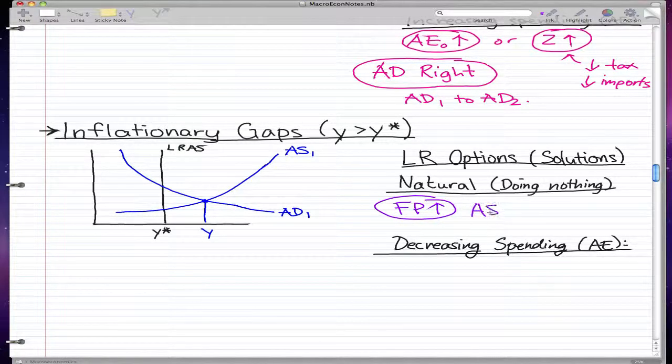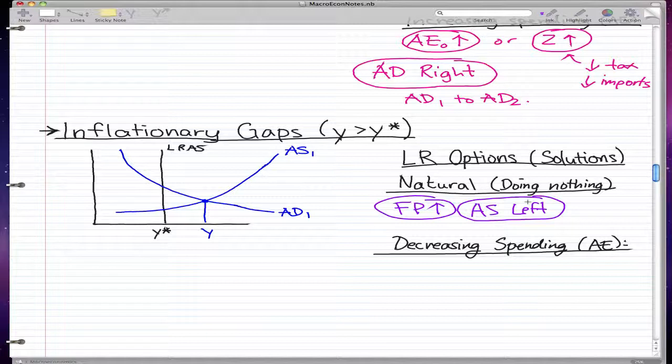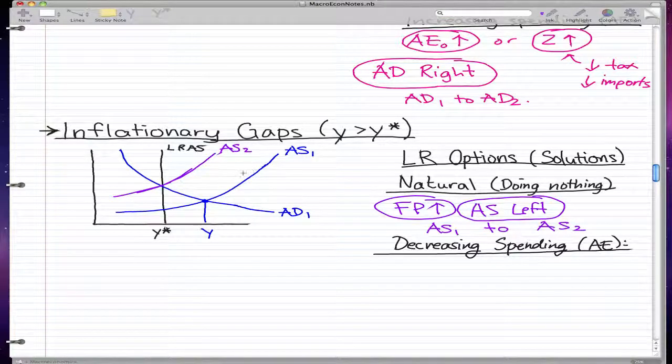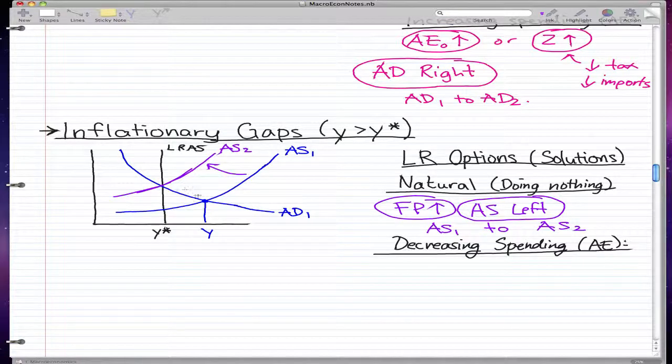AS moves left. Factor prices increase causes the resources needed to produce the good to increase, meaning that with the same amount of money we buy less than before, and that causes our supply to fall. When it falls, it moves left from AS1 to AS2. So this is AS1, to move left it means to go back to AS2, and it will shift like that, go from here to here. And again, now we're at equilibrium.